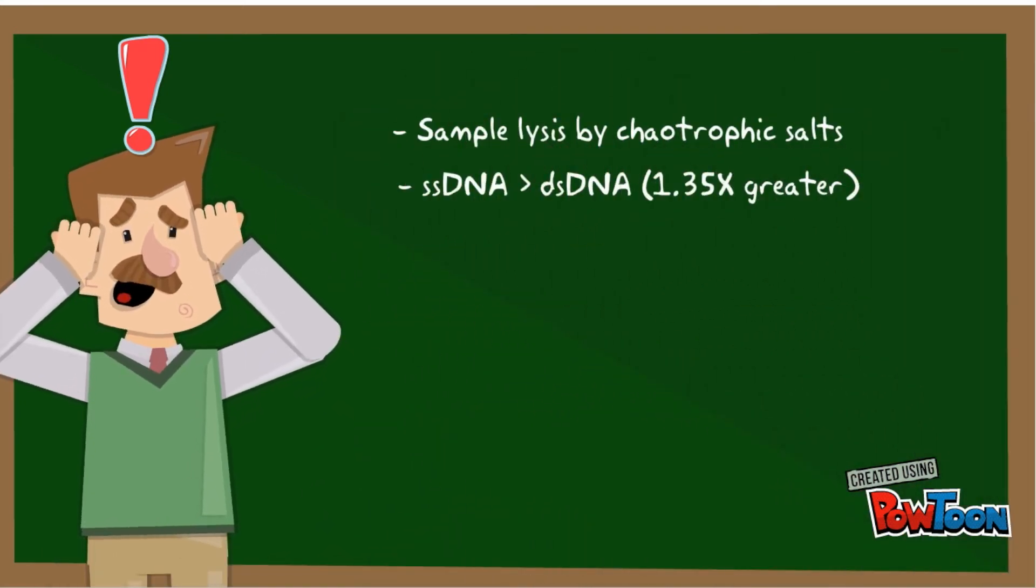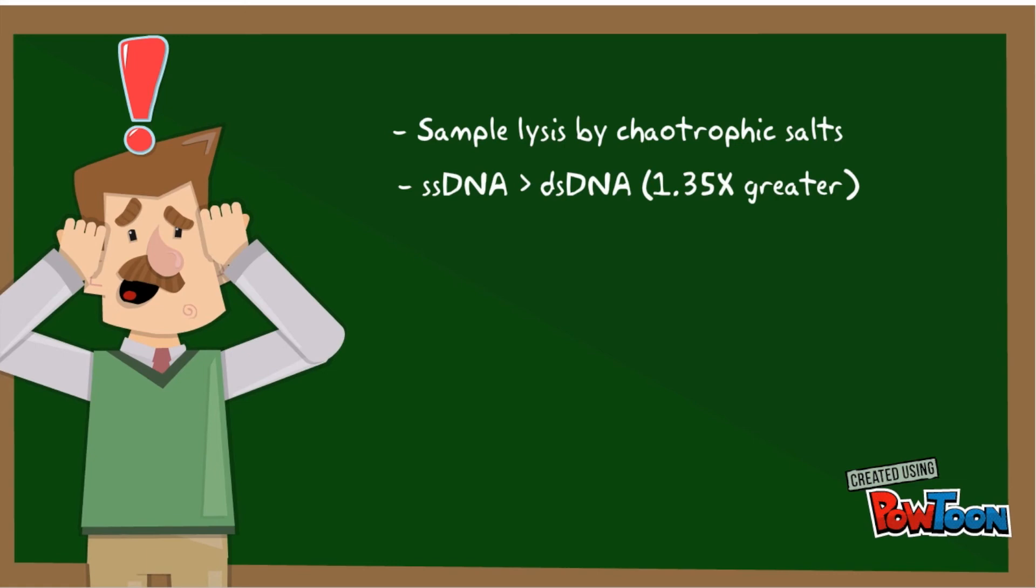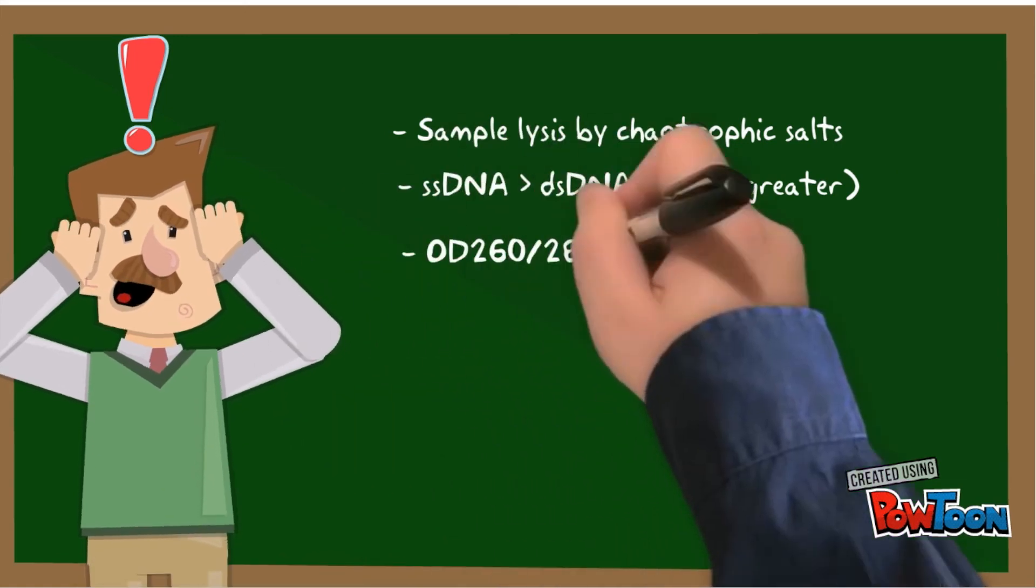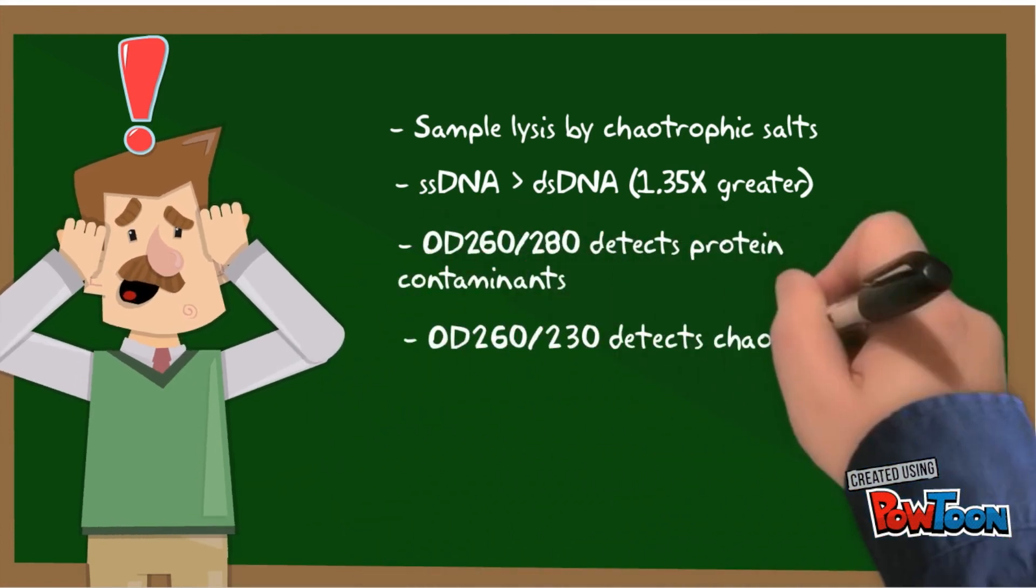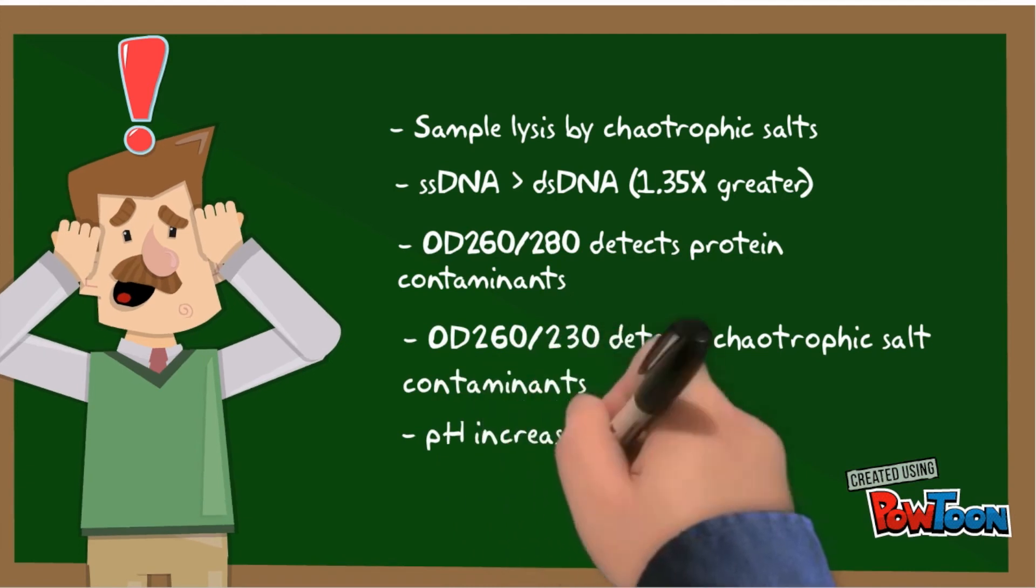Single-stranded DNA absorbs more than double-stranded DNA at 260 nm, and this could have affected your results. We can test for this purity by using an absorbance ratio of 260 nm over 280 nm for contaminating proteins, and 260 nm over 230 nm for contaminating salts.